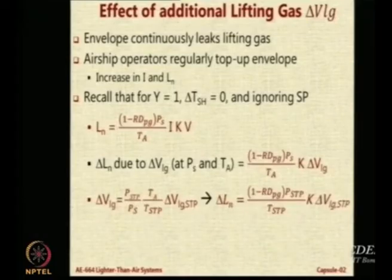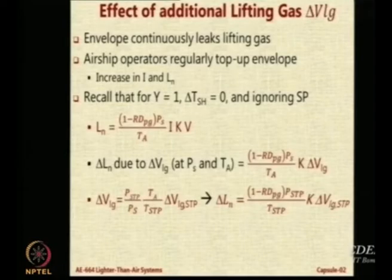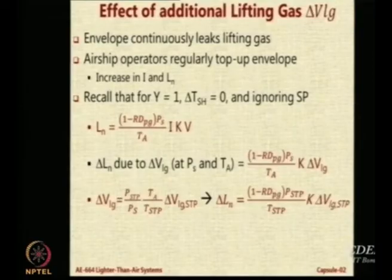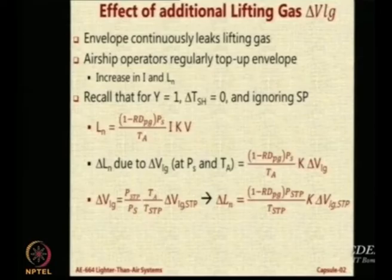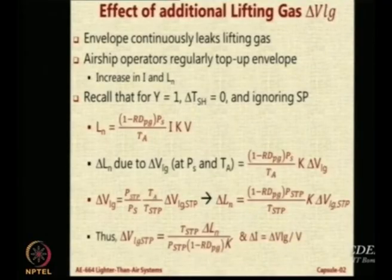Now, how can we bring in simplification here? The volume of the lifting gas is nothing but the pressure of the lifting gas under standard conditions divided by the pressure at ISA condition, times temperature upon TSP — this is basically equating standard and ISA conditions. Therefore, the additional net lift is also expressible in terms of PSTP and TSTP if you use VLG_STP. The change in volume needed is directly proportional to how much lift you want to generate: delta VLG equals delta N times TSP divided by PSP times (1 minus Rd_PG) times K.